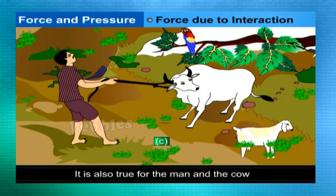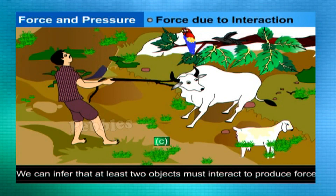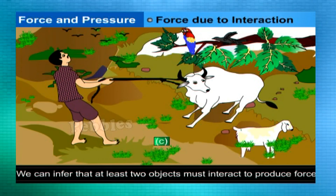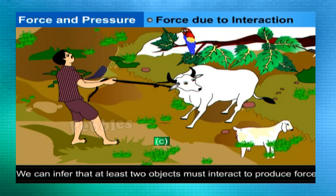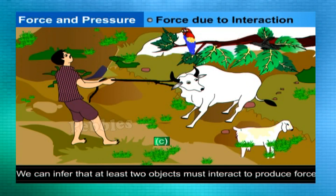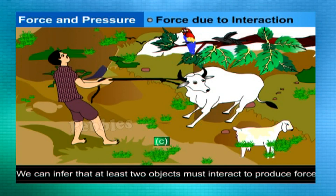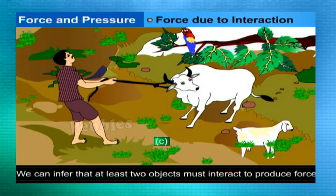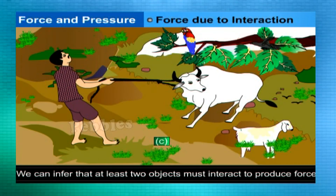From these examples, we can infer that at least two objects must interact for a force to come into play. Thus, an interaction of one object with another object results in a force between the two objects.